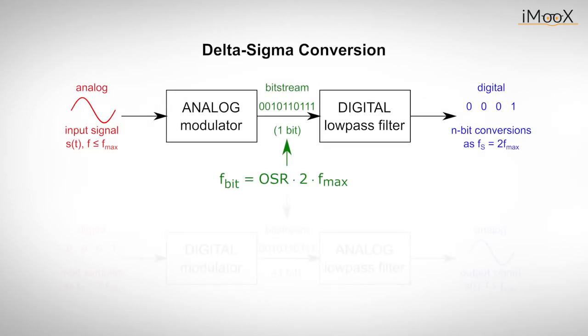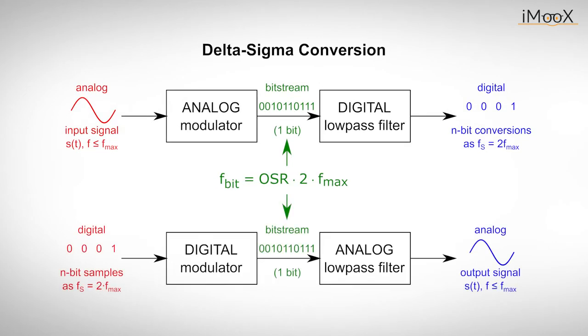The bit stream is then filtered by a digital low-pass filter. By the way, a delta-sigma digital-to-analog converter would work similarly. A modulator first oversamples the digital input signal, which originally has a sampling rate of about 2 times fmax. The intermediate bit stream is followed by an analog low-pass filter to obtain the output signal. In both cases, the bandwidth of the filter limits the incoming bit stream.